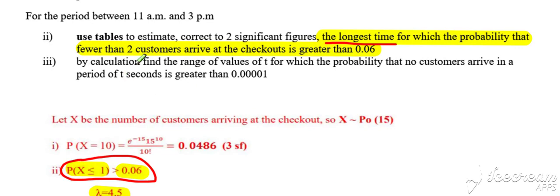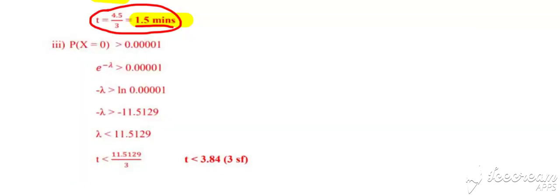In part three, we're asked to, by calculation, find a range of values of t, so similar idea with unknown t, for which the probability that no customers arrive in a period of t seconds is greater than 0.0001.